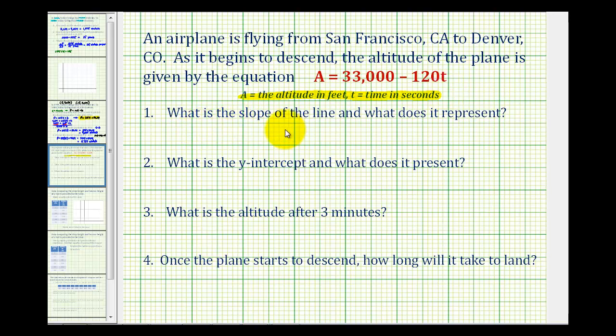Number one, what is the slope of the line and what does it represent? Remember if a line is written in slope-intercept form or the form Y equals MX plus B, the coefficient of X would be the slope.